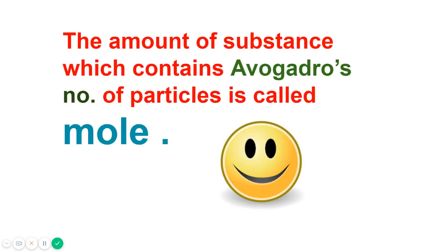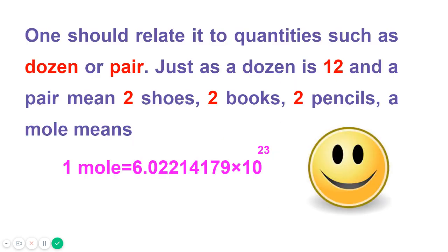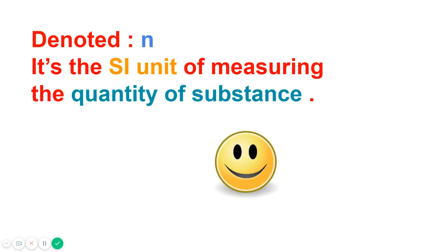There's another definition: the amount of substance which contains Avogadro's number of particles is called a mole. You can relate it to a quantity such as dozen or pair — just as a dozen is 12 and a pair means two, a mole means 6.02 × 10²³. This is known as Avogadro's number, denoted by Nₐ. Mole is the SI unit of measuring the quantity of substance.